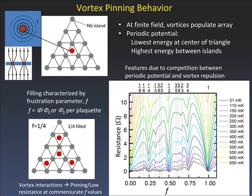For example, if we have f = 1/4, we have one-quarter filling of our plaquettes. Due to vortex interactions, we expect strong pinning at commensurate values of f: when you have an array of vortices, those interact and are strongly pinned, giving lower resistance than at non-commensurate filling. This can be shown very clearly in data: resistance versus frustration parameter at different temperatures shows that at zero field you have zero resistance, and then at f = 1/4, 1/2, 3/4, and 1 the resistance drops again. This shows very strong vortex dynamics and pinning potentials — a very nice system for looking at the interplay between vortex interactions and pinning.